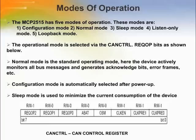The MCP2515 has five modes of operation. Configuration mode is automatically selected after power-up, and a reset can be entered from any other mode by setting the control register bits. When configuration mode is entered, all error counters are cleared. Sleep mode is used to minimize the current consumption of the device; the SPI interface remains active for reading even when the MCP2515 is in sleep mode, allowing access to all registers. Listen-only mode provides a means for the MCP2515 to receive all messages and can be used for bus monitor applications or for detecting the baud rate in hot plug-in situations.